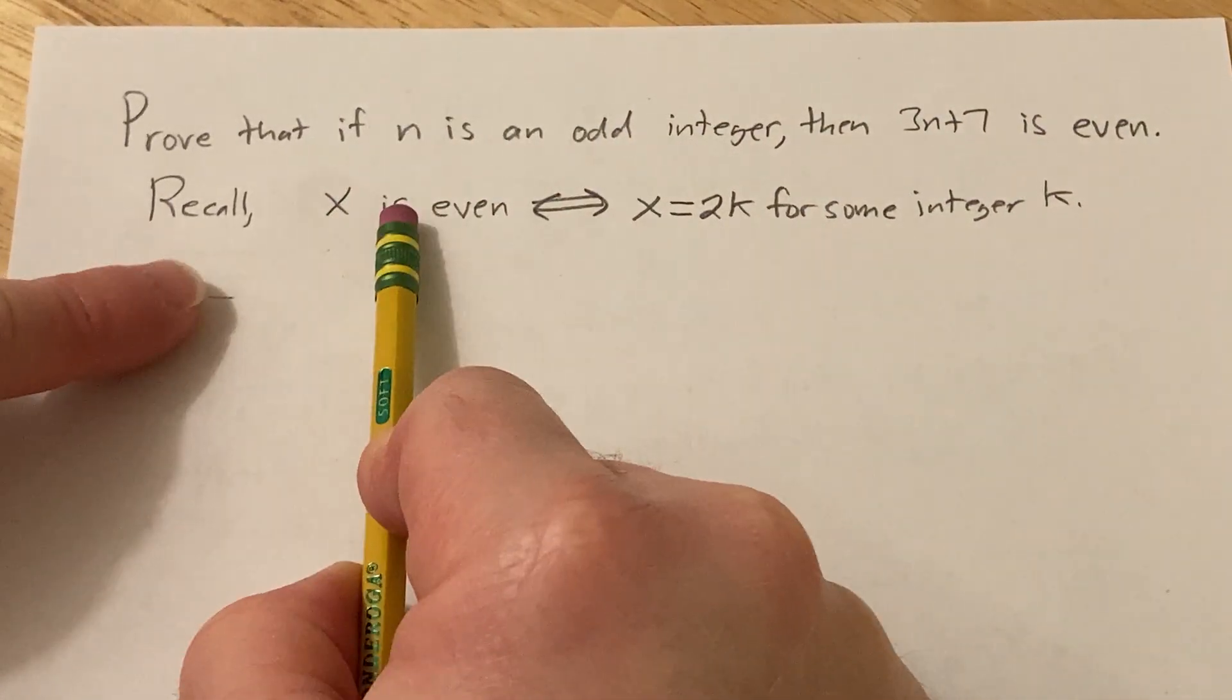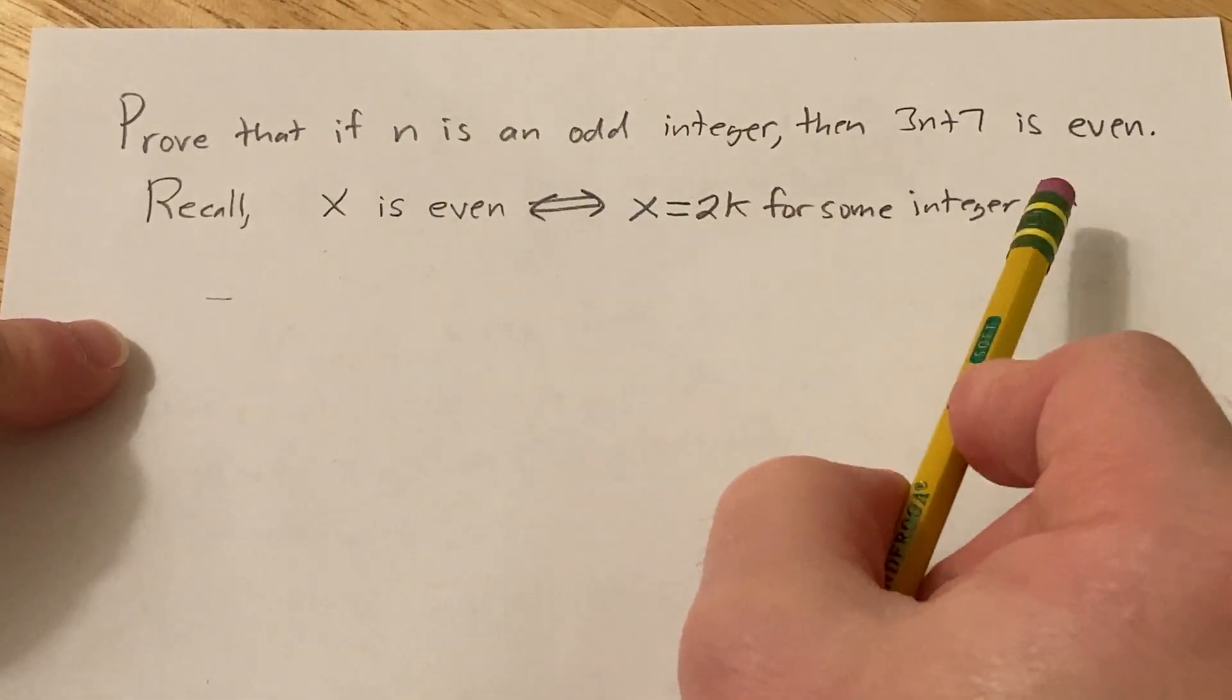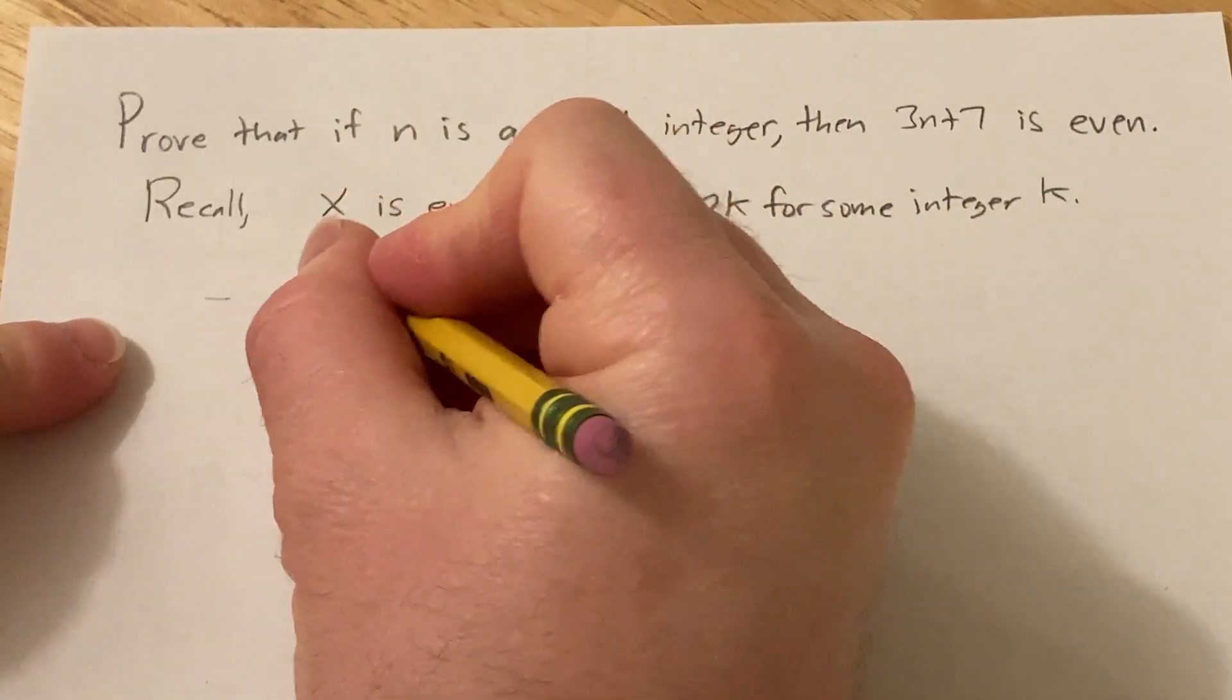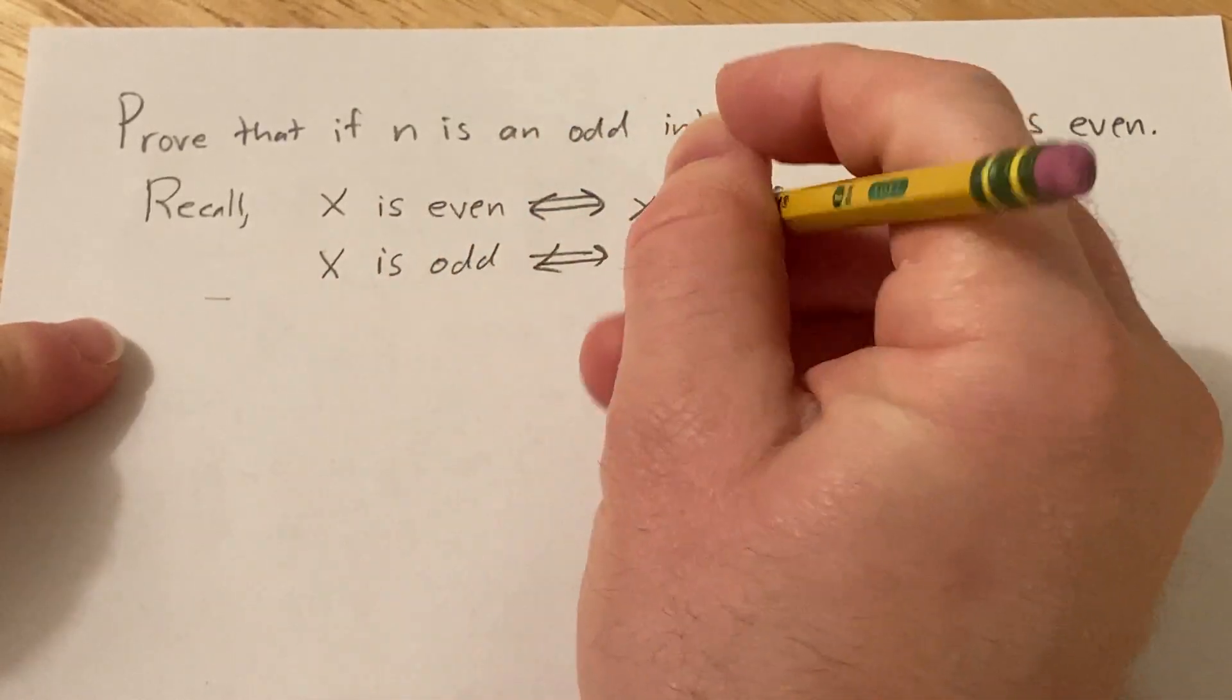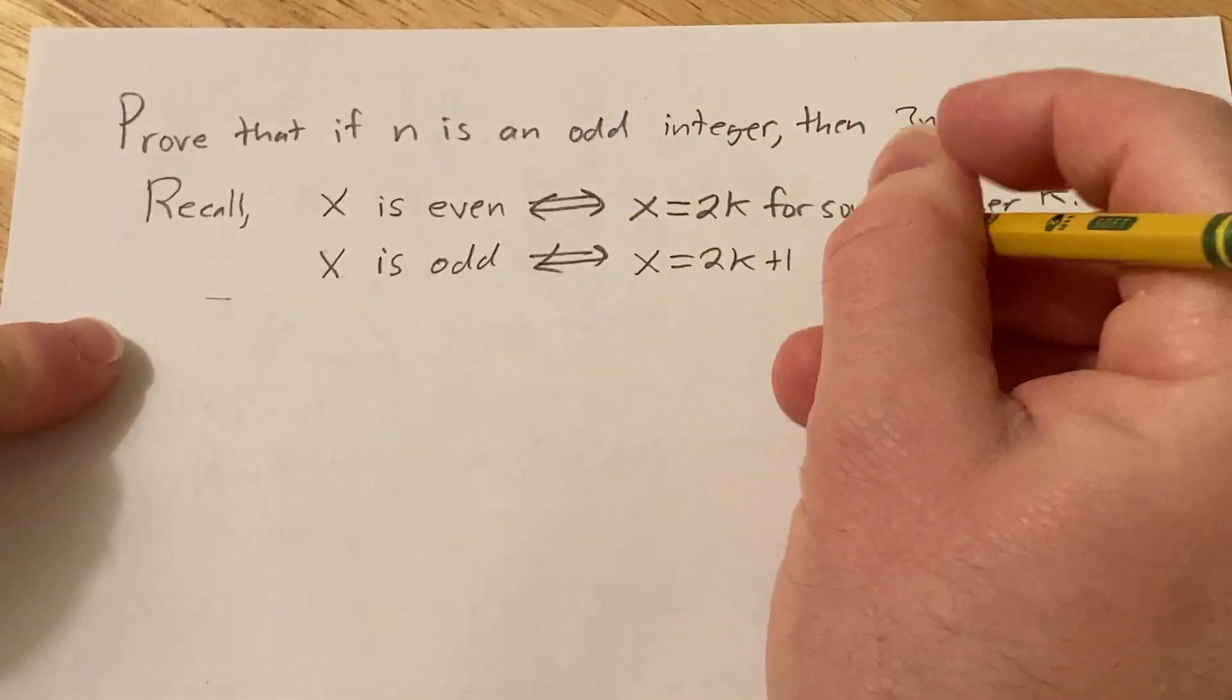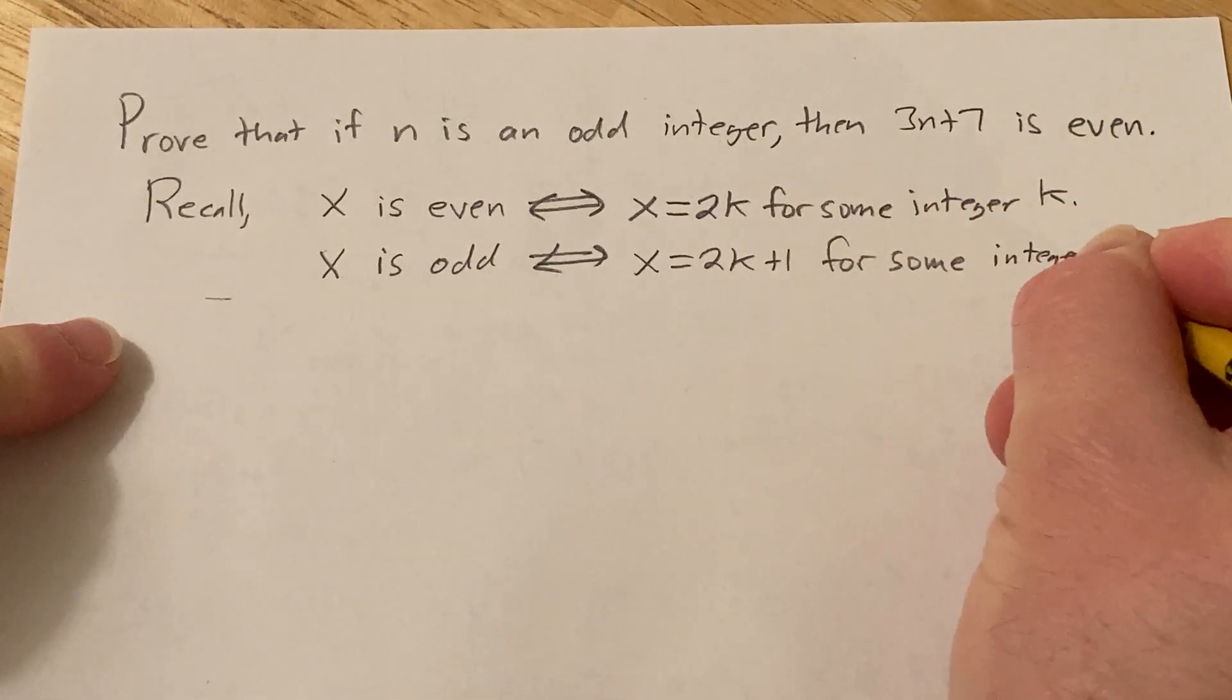So when someone says x is even, you can automatically assume that you can write it as x equals 2k for some integer k. And you don't know what k is, you can't really specify it, that's why you say for some integer. Likewise, x is odd. This means that x is equal to 2k plus 1 for some integer k.